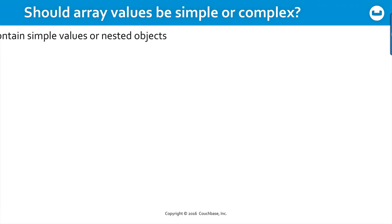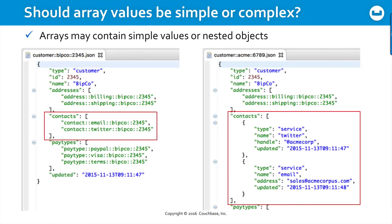Third, should the values in arrays be simple or nested objects? On the left, we see a series of string values within the contacts array that appear to be document IDs. On the right, however, those values are expressed as nested objects. Consider the distinctions here: on the left, it implies there are other documents, whereas on the right, all the values are contained within this document.